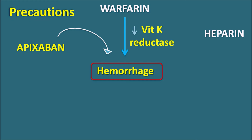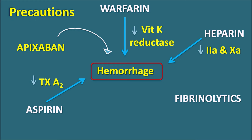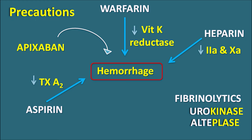Similarly, heparin is an IV anticoagulant that can inhibit Factor 2a and Factor Xa, thereby producing hemorrhage. Aspirin is an antiplatelet agent that inhibits the synthesis of thromboxane A2, so platelets are not activated and aggregated, which can also lead to hemorrhage. Fibrinolytics like urokinase, alteplase, duteplase, and reteplase can also increase the risk of hemorrhage. Apixaban should not be combined with other anticoagulants as it leads to severe bleeding.